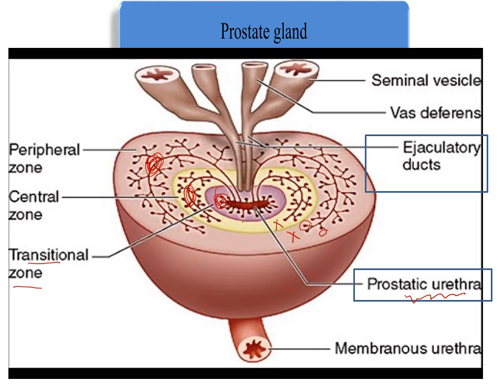The vas deferens joins the duct of the seminal vesicle, and the ejaculatory duct joins the prostatic urethra from the posterior aspect.